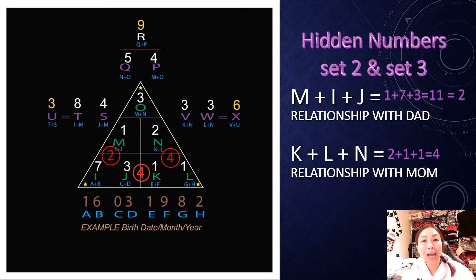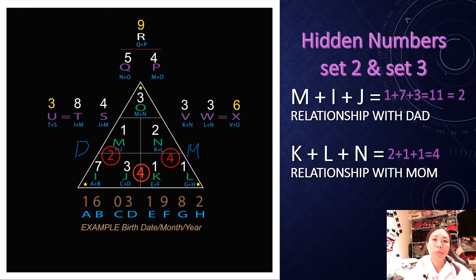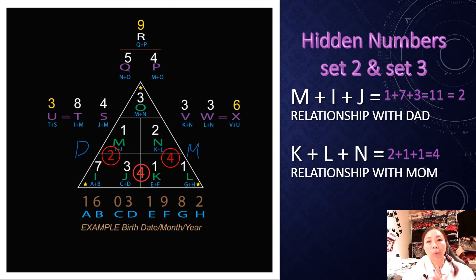When you have your chart ready, it's going to look something similar to this one here. On the left side is the relationship with your father, and on the right side is the relationship with your mother. I'm going to put some initials here so it's easier to see. I'm going to read each set of numbers only one time, but it's going to depend on which parent you have it with, and that's going to reveal the relationship you have with them.